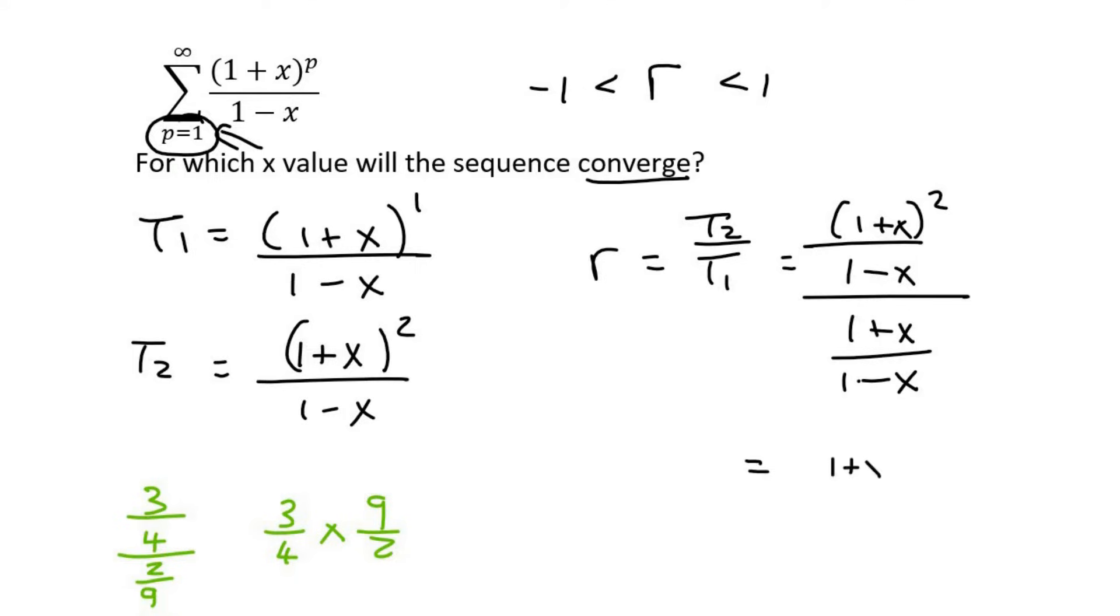And so that's going to be 1 plus x squared over 1 minus x multiplied by 1 minus x over 1 plus x. So this cancels, and then this cancels with 1 of these. So you've just got 1 plus x left over. So r is 1 plus x.